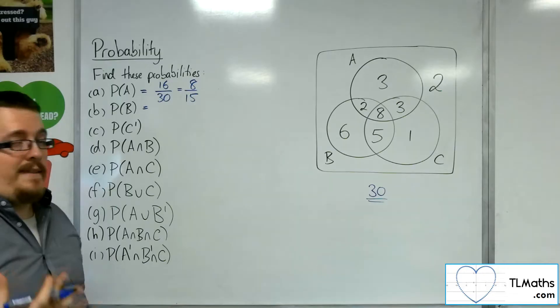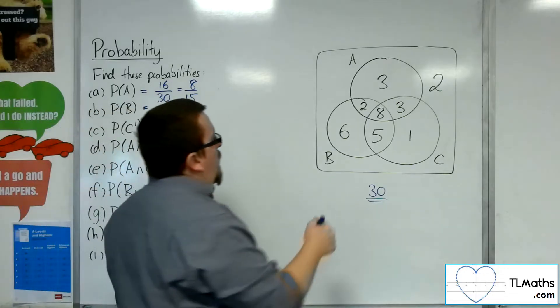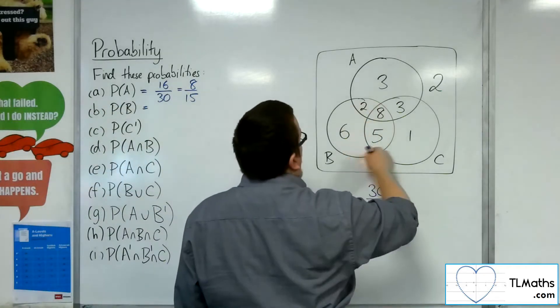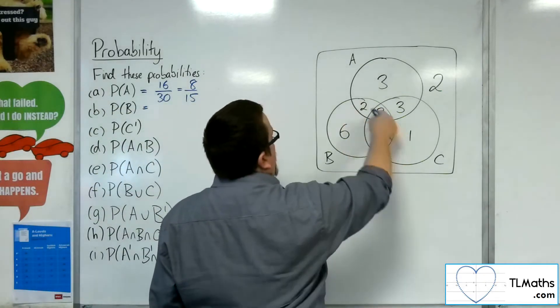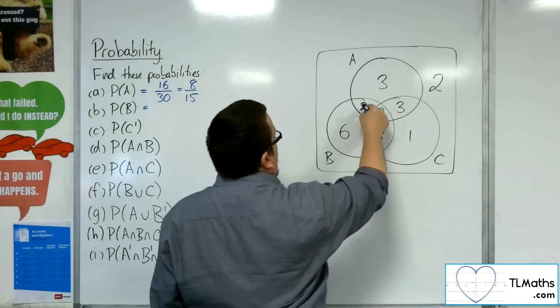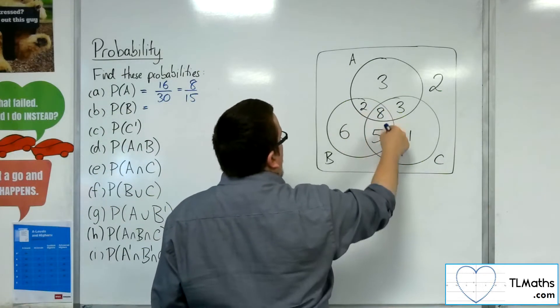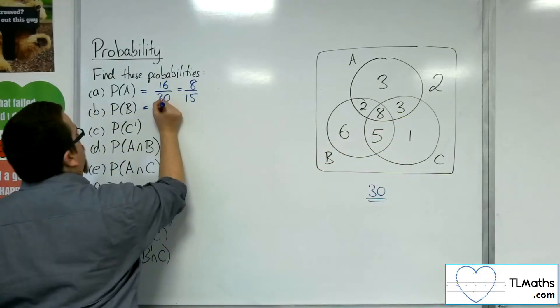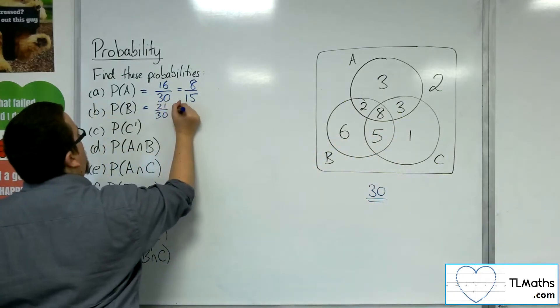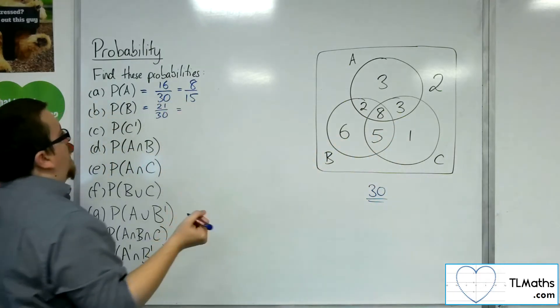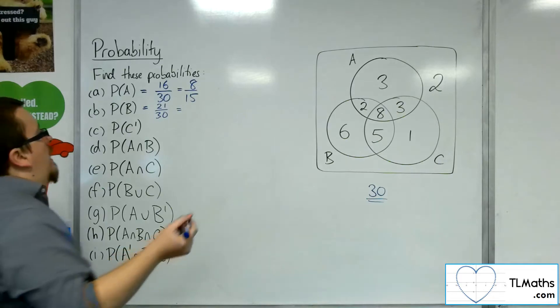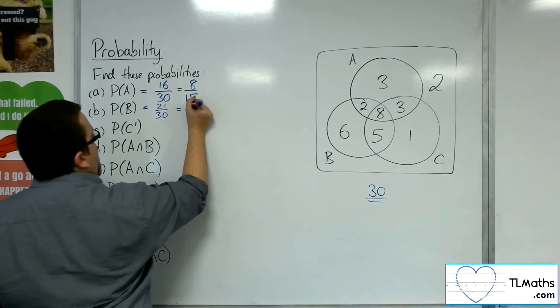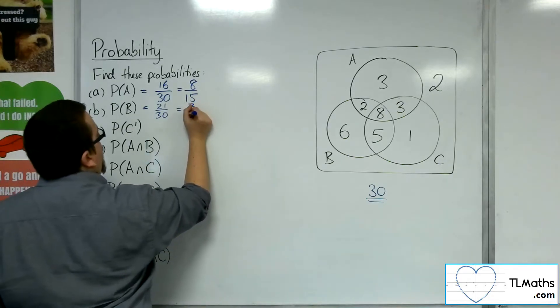Probability of B — anything that is within the circle of B: 6, 8, 16, 21. So 21 out of 30, which is seven-tenths.